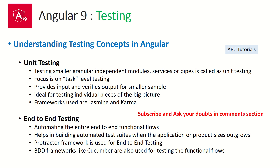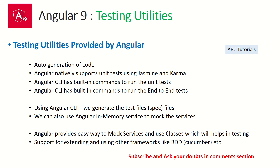Angular helps us in auto-generation of code — whenever we generate a component or a service, a spec file is also automatically generated, which is your utility or test script file. Angular natively supports unit tests using Jasmine and Karma. When you install Angular, Jasmine and Karma frameworks are already included, which means they are natively supported so we can use both to write and test our scripts thoroughly. Angular CLI also has built-in commands to run unit tests.